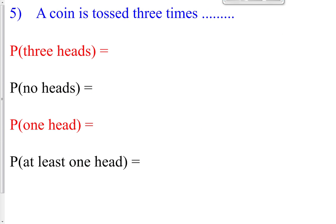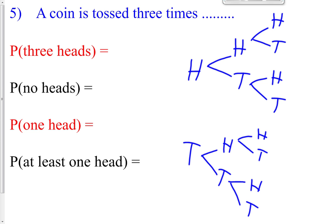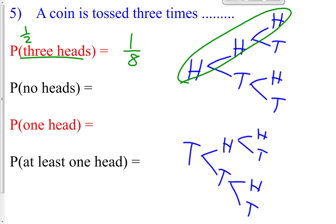Question 5 uses a tree diagram for flipping a coin three times. Each flip can be heads or tails, giving eight total outcomes. What's the probability of getting three heads? HHH is just one outcome out of eight — or using AND probability: 1/2 × 1/2 × 1/2 = 1/8. That's why we multiply — it's a head and a head and another head.